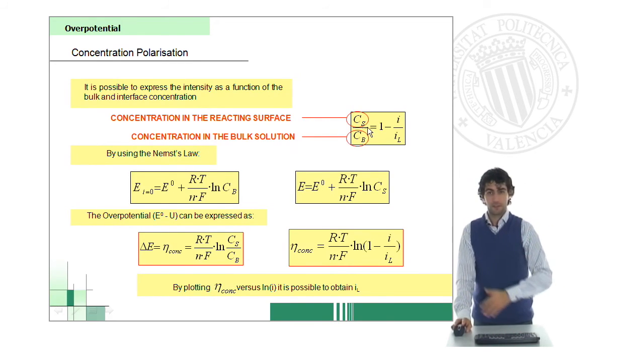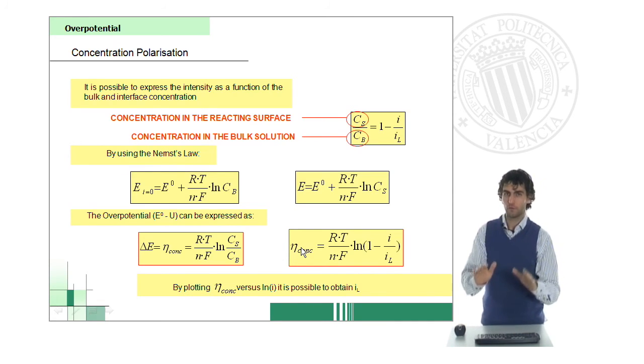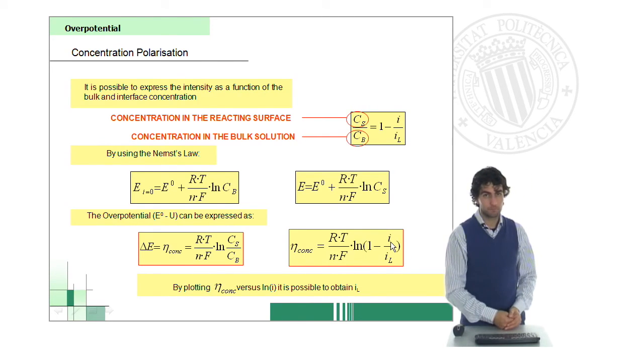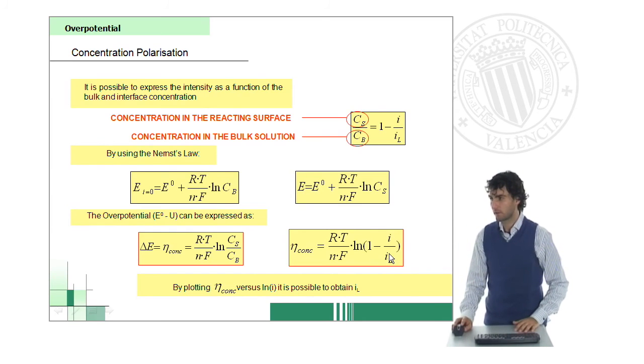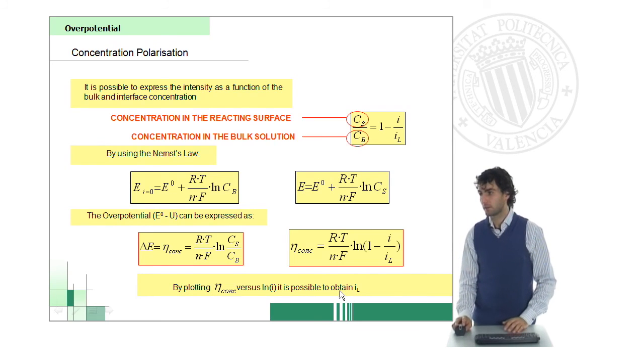Again, we can do a mathematical approach, considering these relations and considering the Fick's law, and that will lead us to this final expression, in which we can relate the overpotential, which is the loss of potential due to concentration polarization, with the intensity of the fuel cell. You see the parameters are again appearing here, it's very easy to plot overpotential versus logarithmic expression of intensity, and then obtain this parameter.